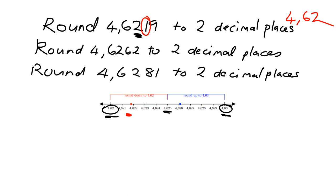Similarly, if we had 4.6262 and we're rounding to two decimal places, our focus is on the second decimal place, so we look 1 to the right of that. We see it's a 6, so we're lying in the upper region, and so we round up to 4.63.